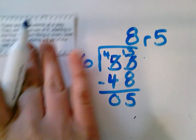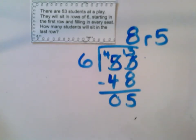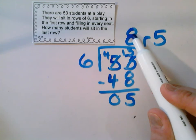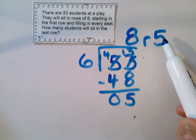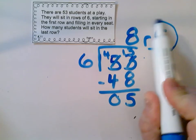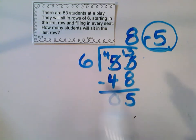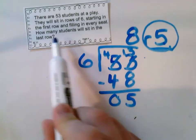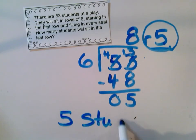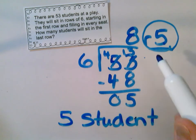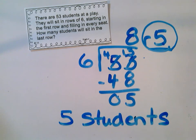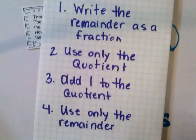Looking at this, the question was how many students will sit in the last row? To fit everybody we'd need 9 rows, but the question isn't asking how many rows we need — it's asking how many students will sit in the last row. That's just these 5 that were left over. This is strategy number 4: use only the remainder. 5 students will sit in the last row, because that is how many are left after we fill up 8 complete rows of 6. Today you're going to do a few problems where you interpret the remainder, decide which strategy to use, and find the answer.